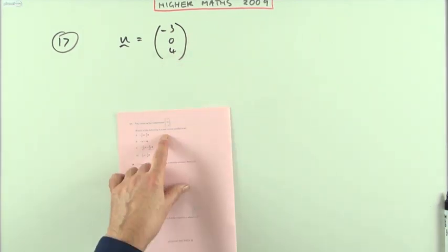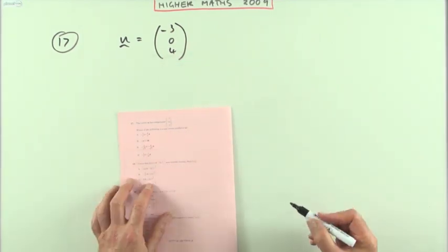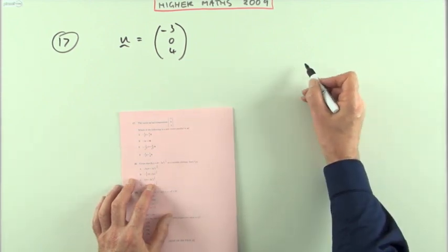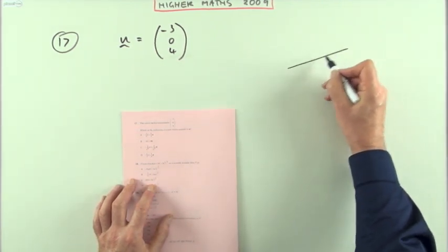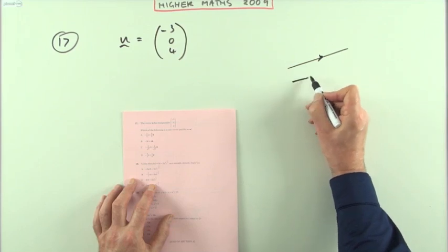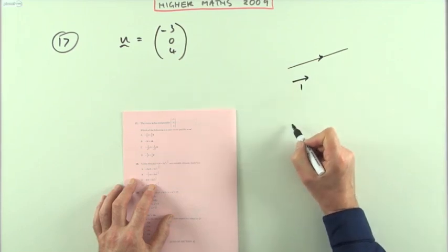Problem 17: Here's a vector and it wants a unit vector parallel to it. Well that simply means however vector u goes, I'll just make it go this way anyway, a unit vector parallel means it goes the same way but its length is just one.